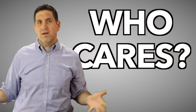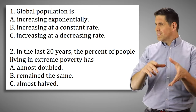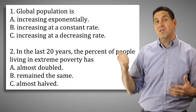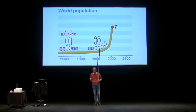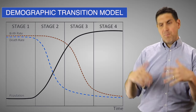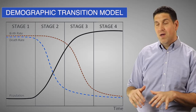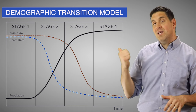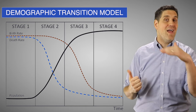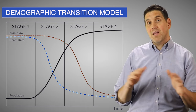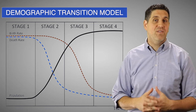So who cares? You do — because it's important to understand economic development so you don't have preconceived ideas about the world. There's a lot written and said about population growth, and there are people pushing governments to limit it. But the DMT shows that population is going to level off anyway — it's going to cap out at around 10 or 11 billion sometime in the next 50 years.